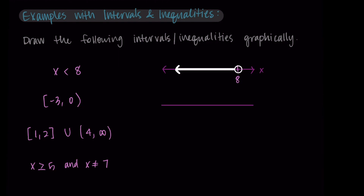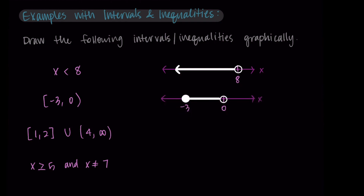Next we're looking at the interval from negative three to zero, where we include negative three and don't include zero. I'll put negative three and zero on my number line, use a solid dot at negative three to indicate we're including that point — corresponding to the square bracket — and an open circle at zero since we go up to that point but don't include it, corresponding to the parenthesis. Then I'll draw a solid line in between.